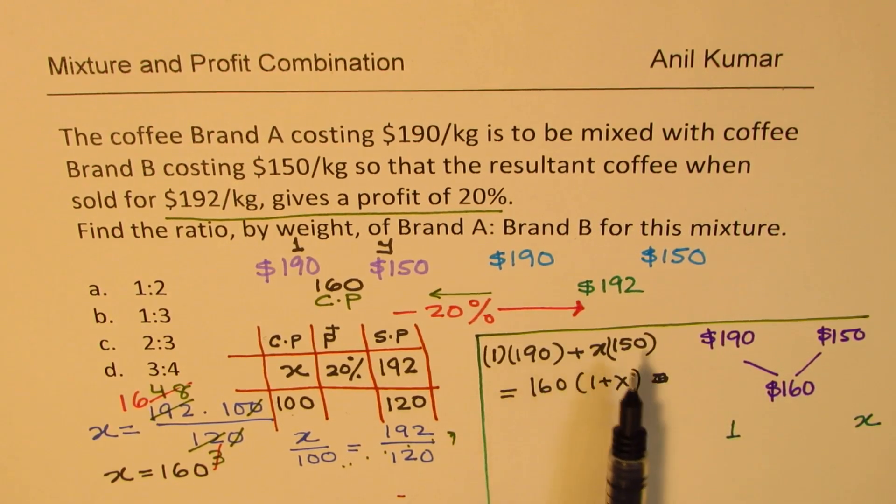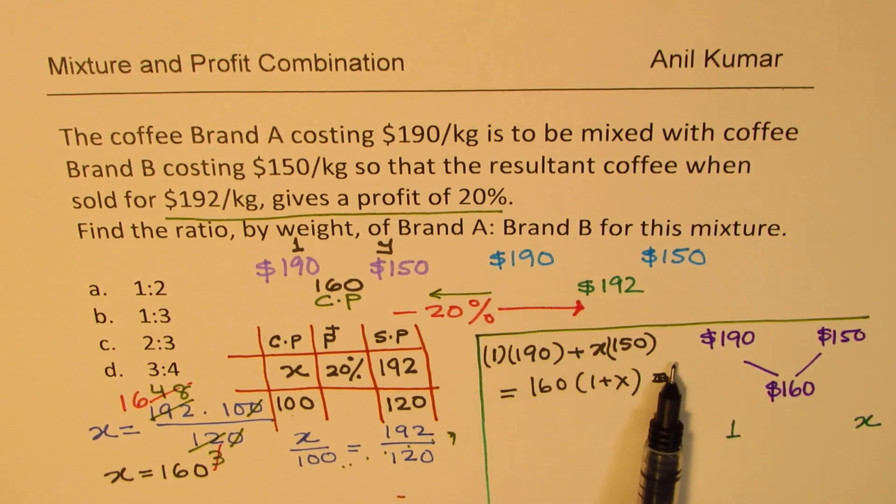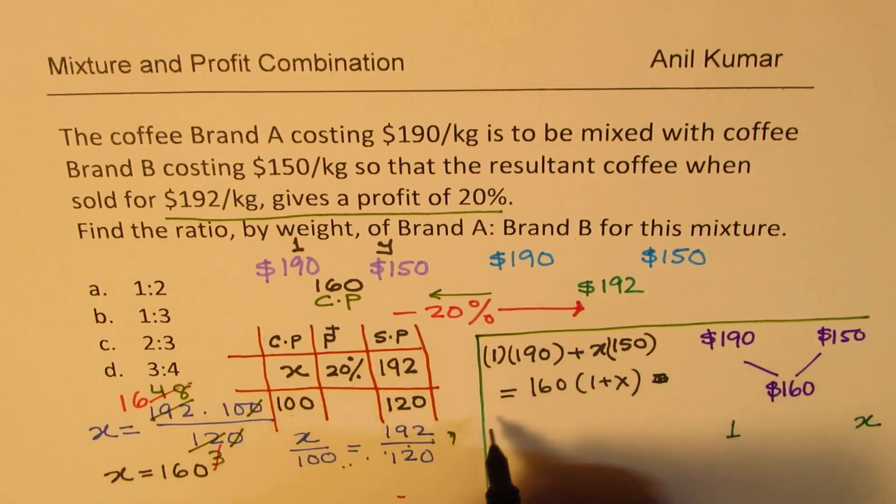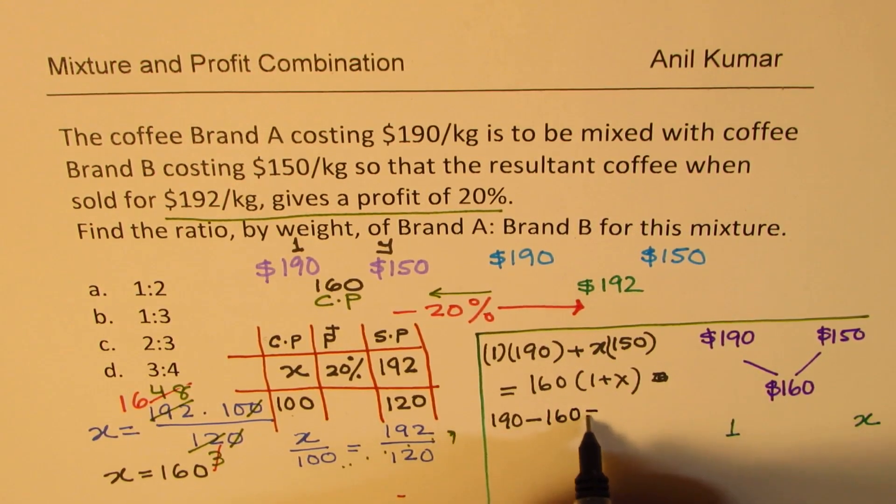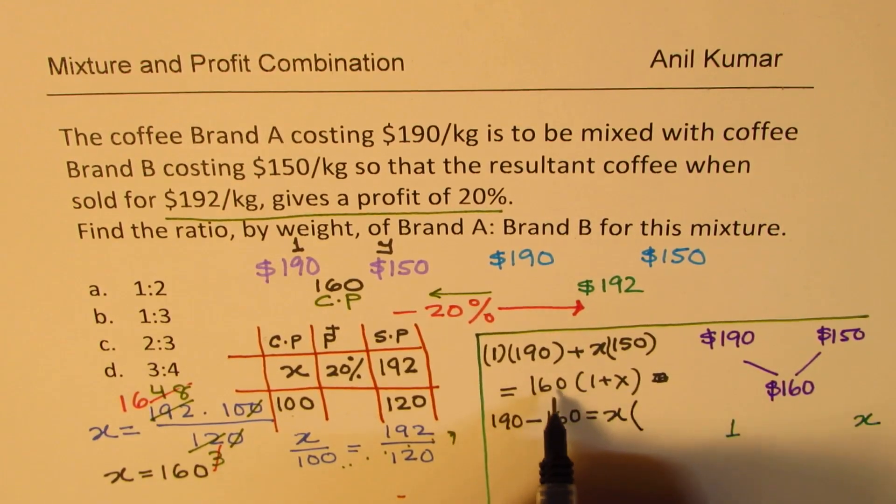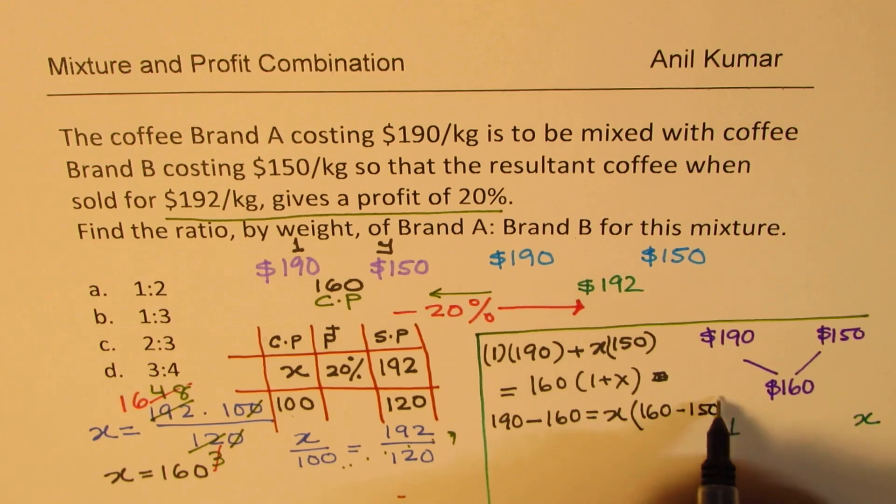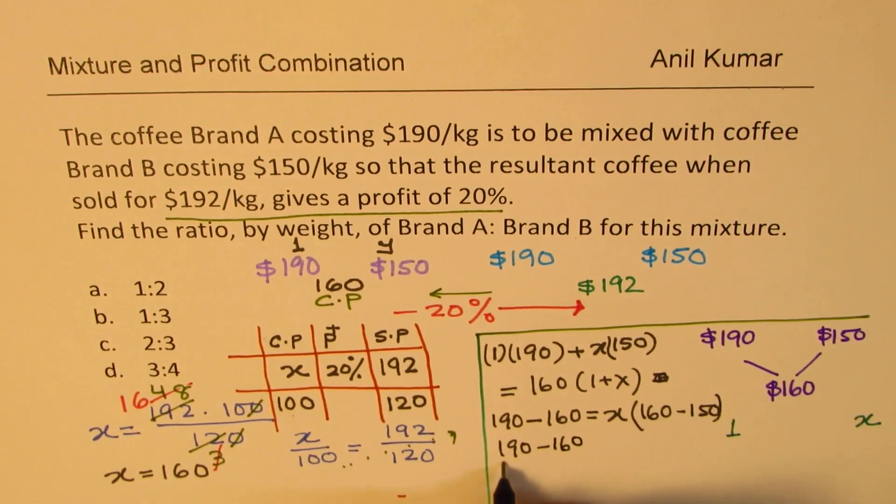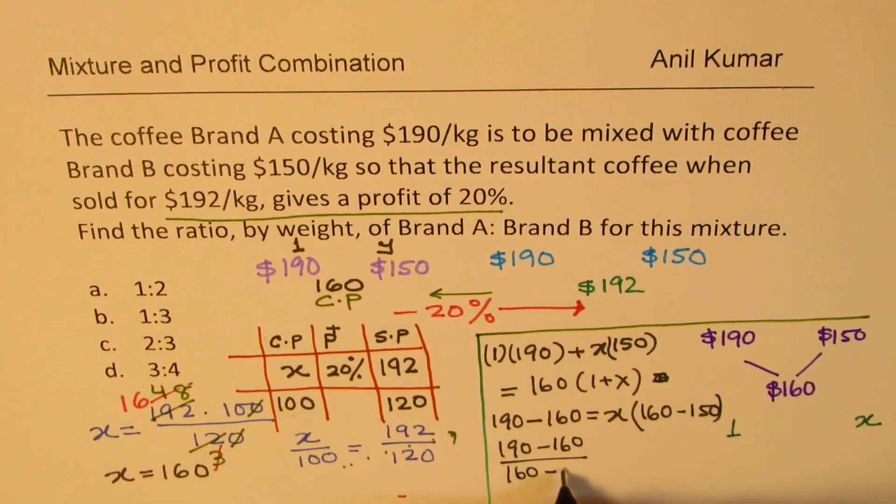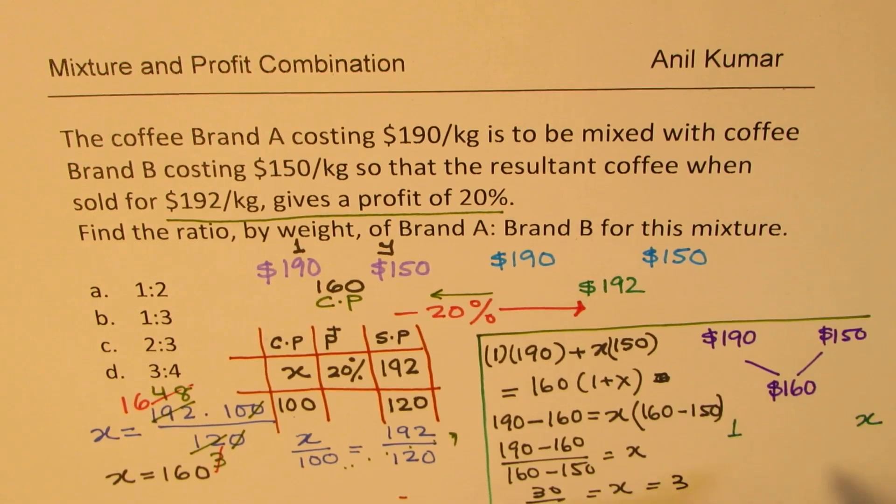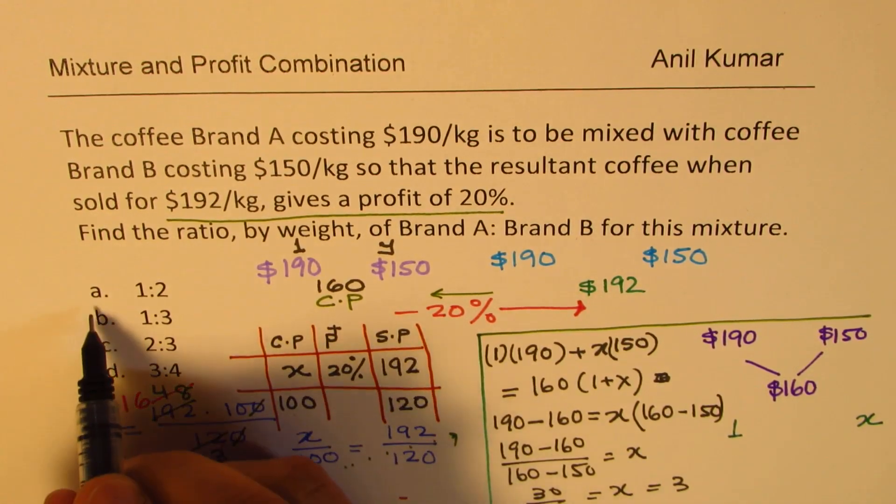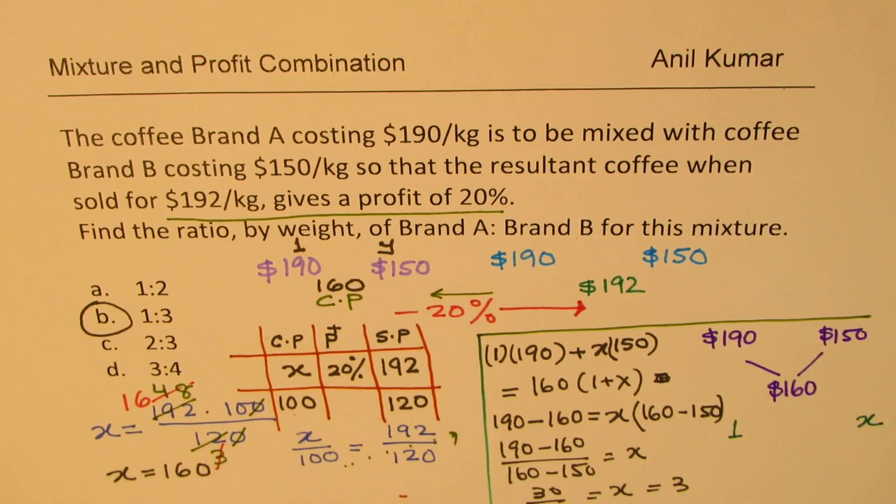To solve this equation, there is only one variable to work with. We will bring X to one side. So to solve this, we get 190 minus 160 times 1, which is 160 equals to X times 160 minus 150. And therefore, we get 190 minus 160, which is 30, divided by 160 minus 150, the value of X, which definitely is 30 over 10. Or the value of X is 3. So we get a ratio 1 is to 3. So our answer is B, 1 is to 3.